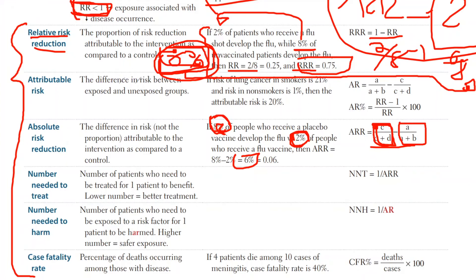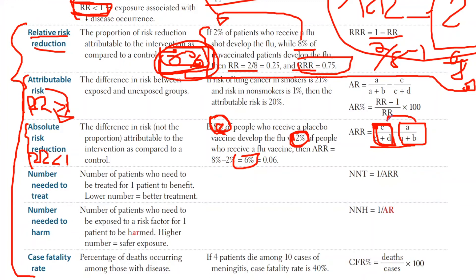Attributable risk is actually the same as absolute risk reduction, with one key difference: instead of being protective, the exposure is increasing your chance of developing disease. So for attributable risk, relative risk must be greater than one, while for absolute risk reduction it must be less than one. The formula flips to exposed minus unexposed: (a over a+b) minus (c over c+d). In the example given, exposed is 21% and unexposed is 1%, giving an attributable risk of 20%.